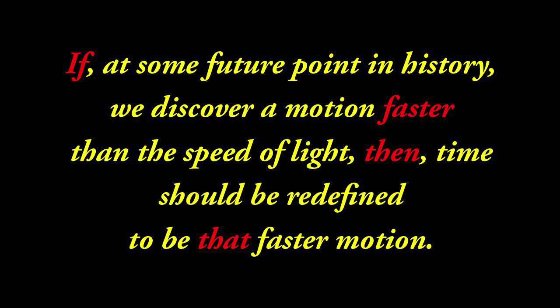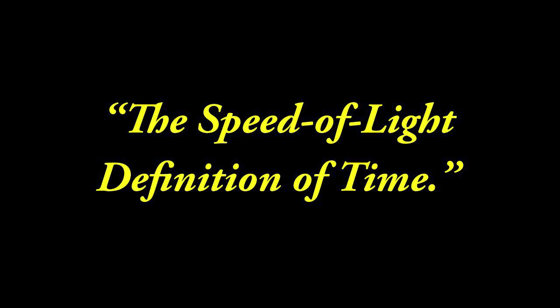What is the solution? All we have to do is redefine our definition for time to always be the fastest known motion. At this point in history, we call the fastest known motion the speed of light. If at some future point we discover a motion faster than the speed of light, then time should be redefined to be that faster motion. We must redefine our beginning definition for time to be identical to nature's speed limit — what we now call the speed of light. That is why it is called the speed of light definition of time.